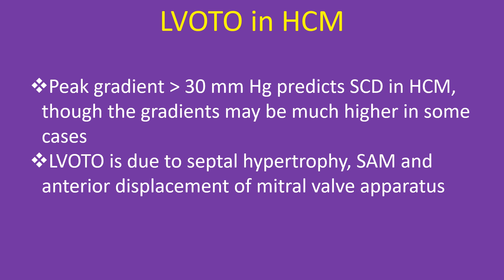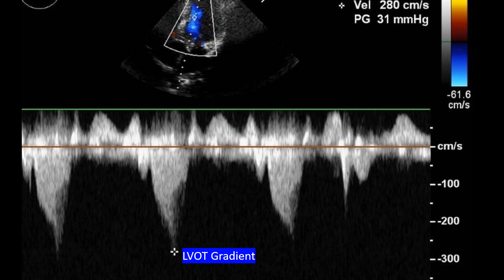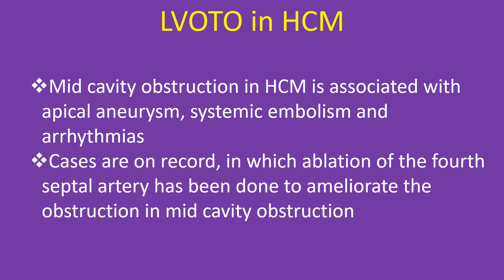LVOTO in HCM: A peak gradient more than 30 mmHg predicts sudden cardiac death in HCM, though gradients may be much higher in some cases. LVOTO is due to septal hypertrophy, SAM, and anterior displacement of the mitral valve apparatus. Doppler echo showing LVOT gradient in HCM. Mid-cavitary obstruction in HCM is associated with apical aneurysm, systemic embolism, and arrhythmias. Ablation of the 4th septal artery has been performed to ameliorate mid-cavitary obstruction in some cases.